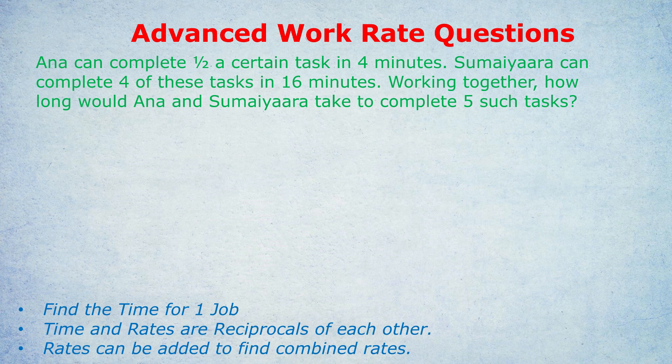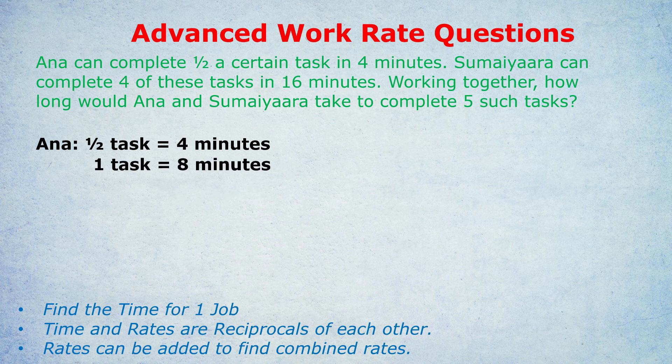Let's show off this process with this question. Anna can complete half a task in four minutes. Sumayara can complete four of these tasks in 16 minutes. Working together, how long would Anna and Sumayara take to complete five such tasks? Step one: find the time for one job. If Anna can complete half a task in four minutes, she can complete one full task in eight minutes — multiply by two. For Sumayara, she can complete four tasks in 16 minutes, so divide by four: she completes one task in four minutes.